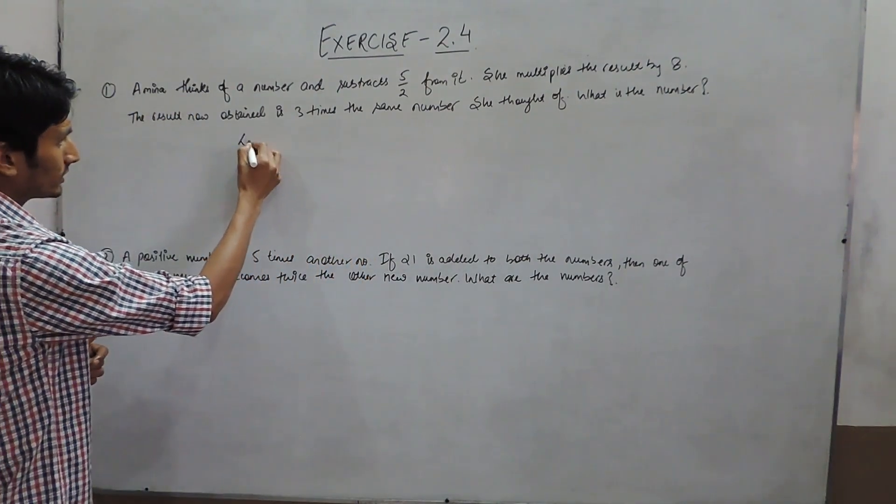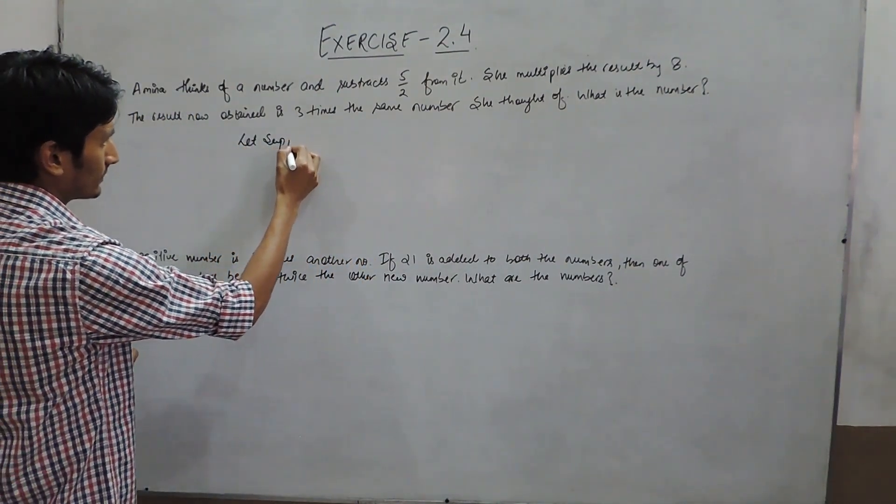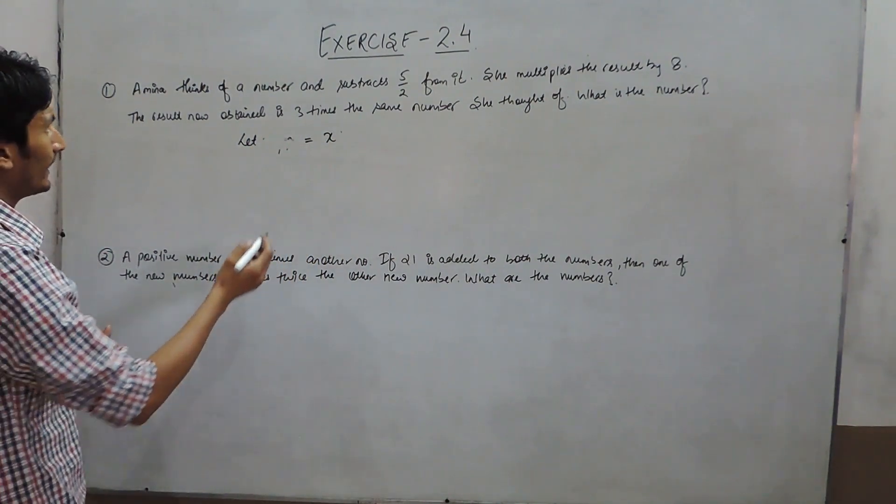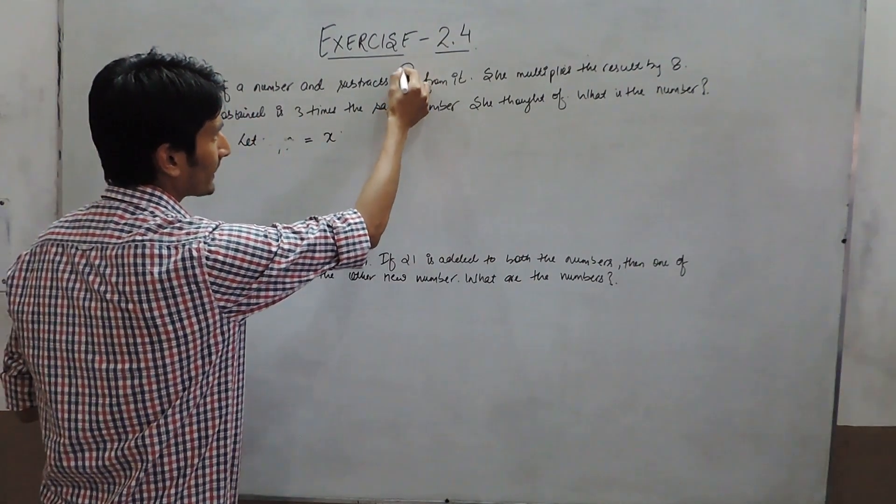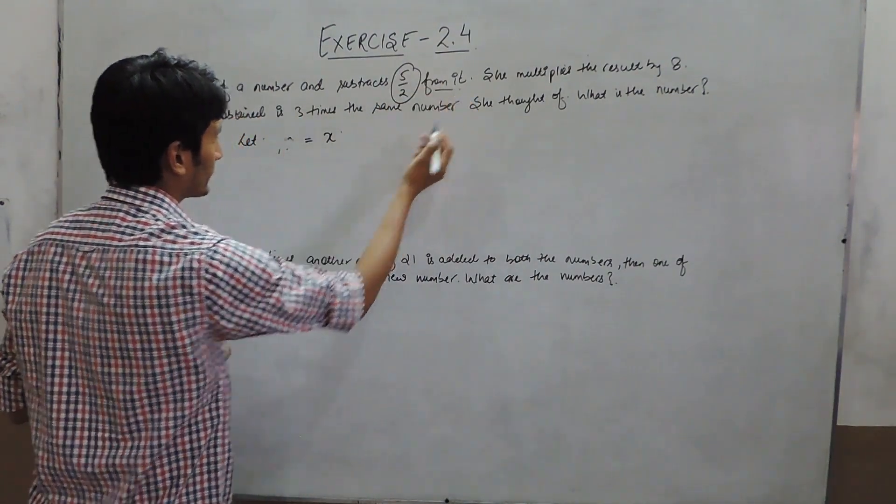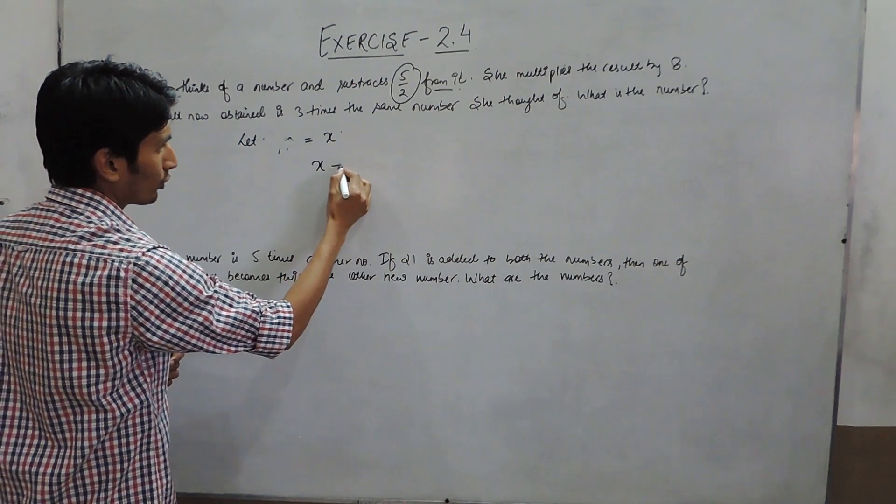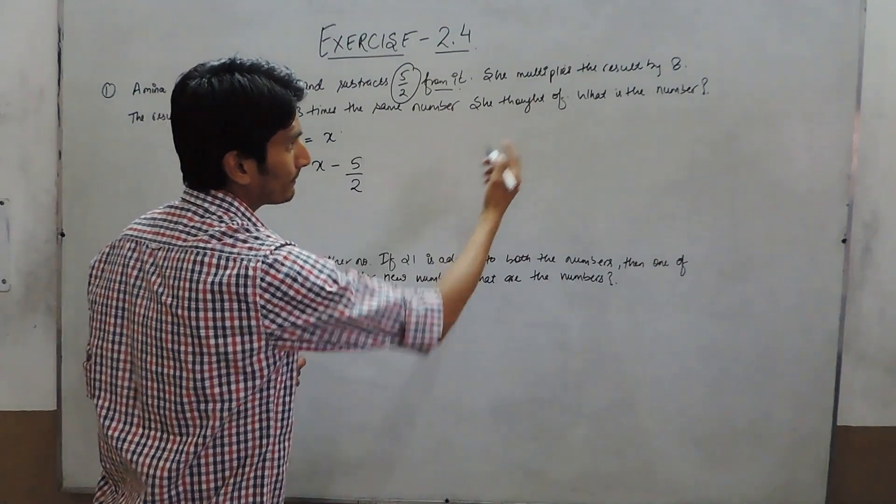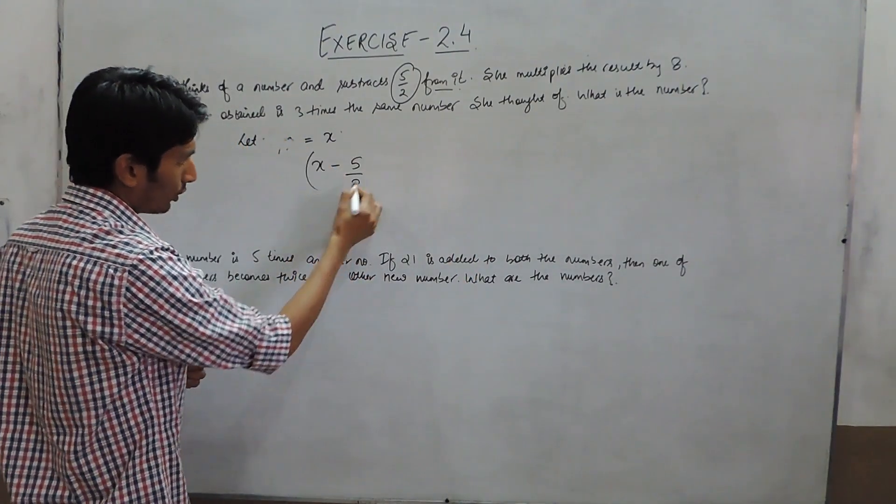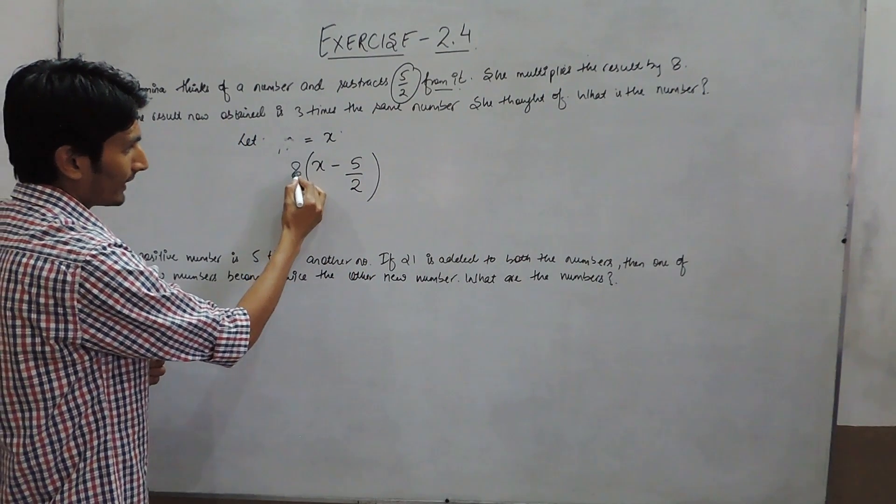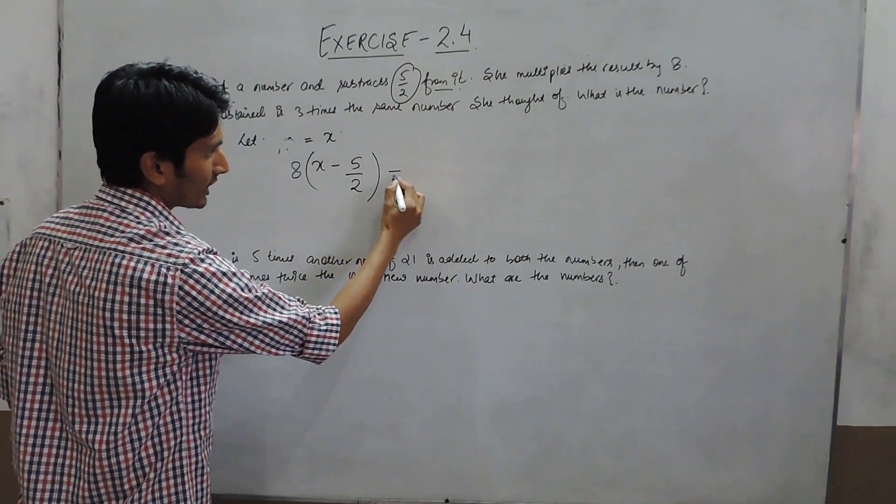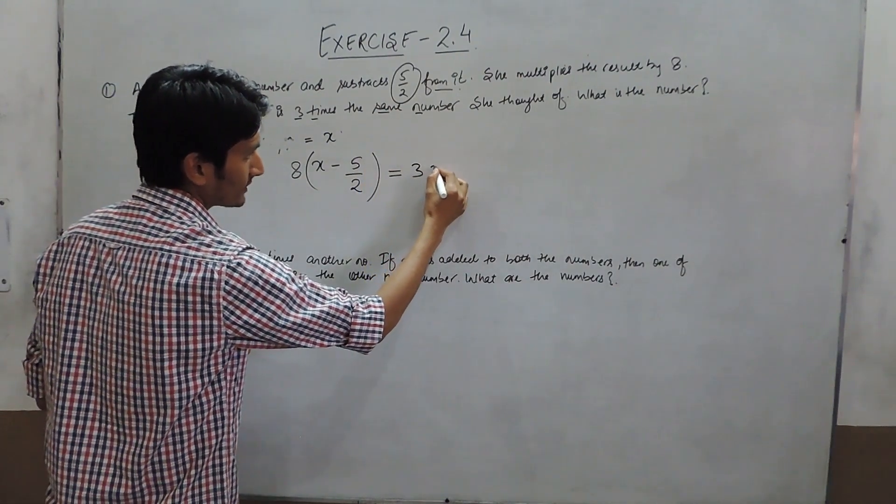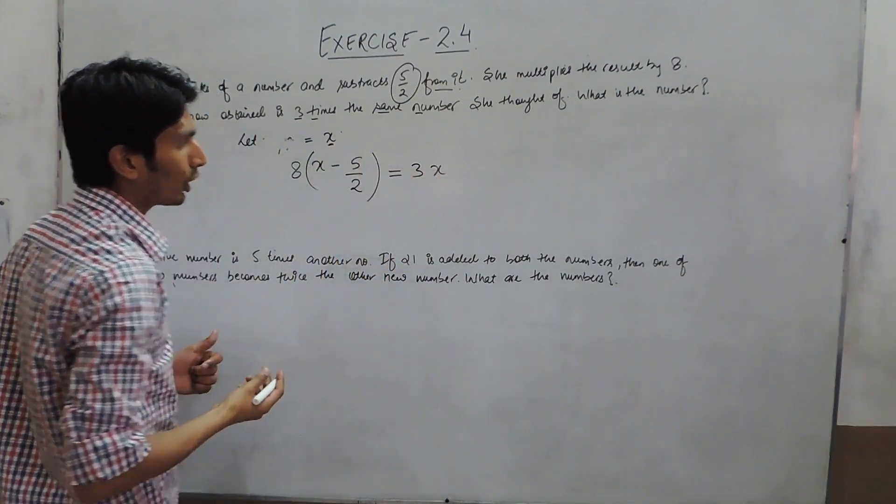Let the number be x. In the first case, she subtracts 5/2 from it. From x she subtracted 5/2 and multiplies the result by 8. When she multiplies 8 by this new number, it gives 3 times the same number she thought of.